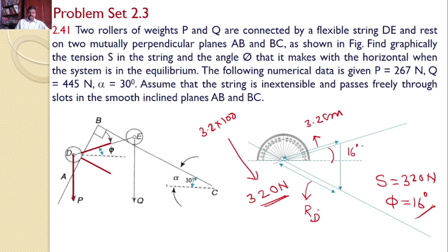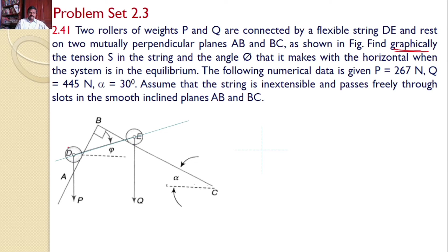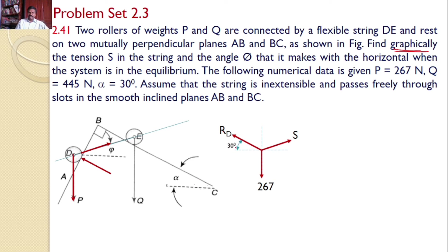You can extend the same concept to roller E to find RE. You can also solve the same problem analytically. For the free body diagram of roller D, there are three forces: self weight, reaction, and string force S. Transferring all three forces onto an XY plane — Rd makes an angle of 30 degrees and S makes an angle phi with the horizontal.